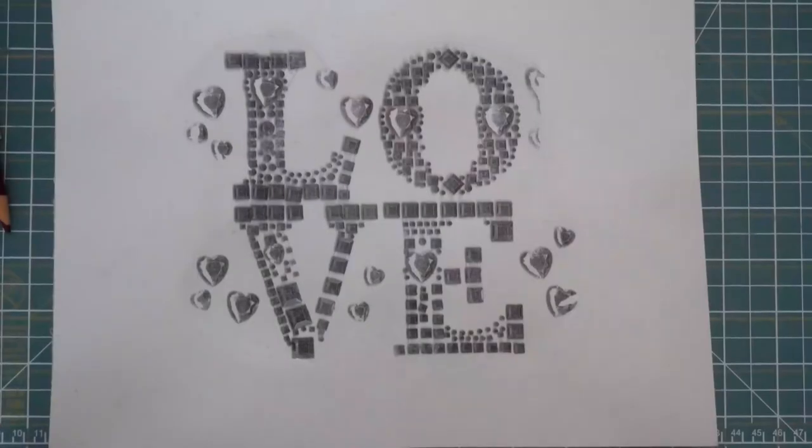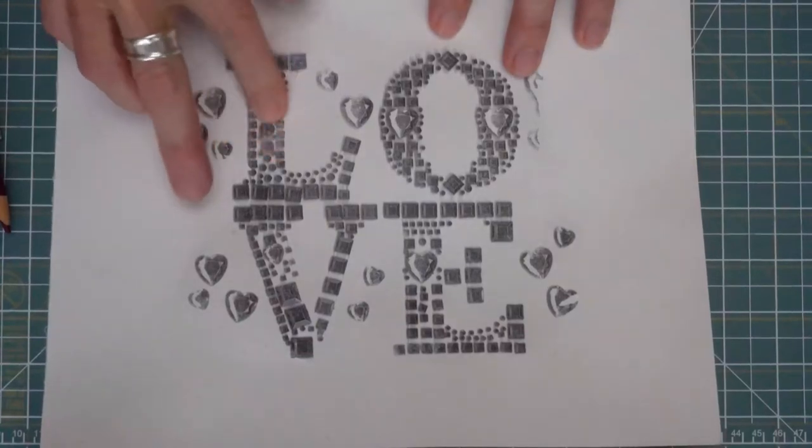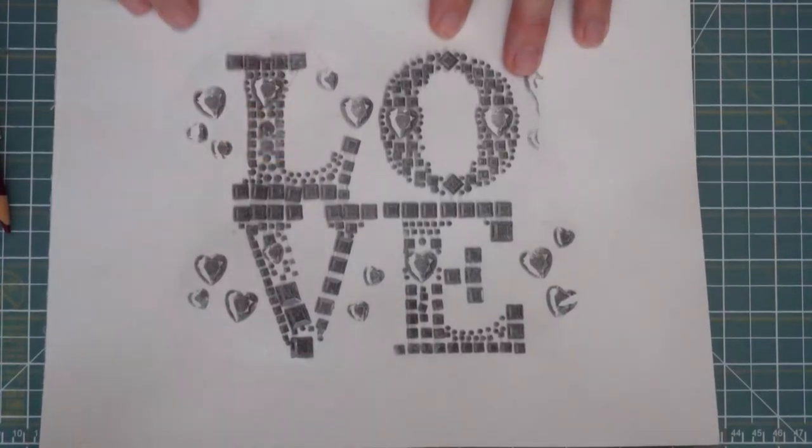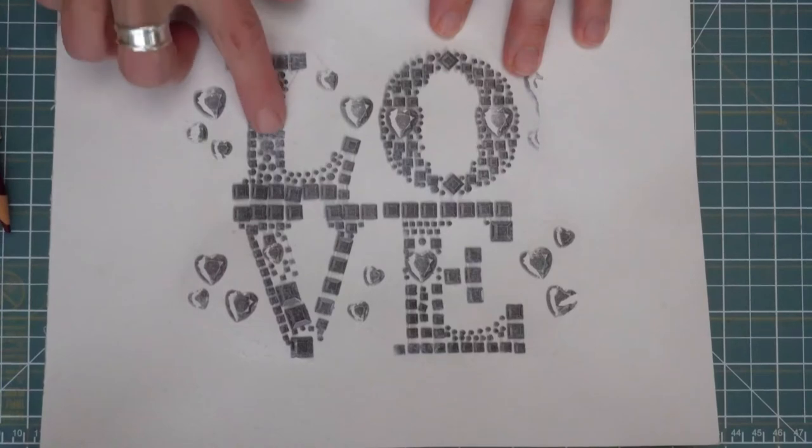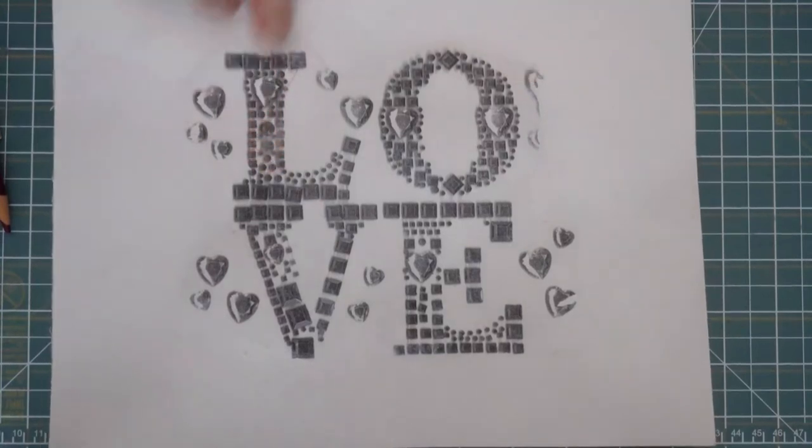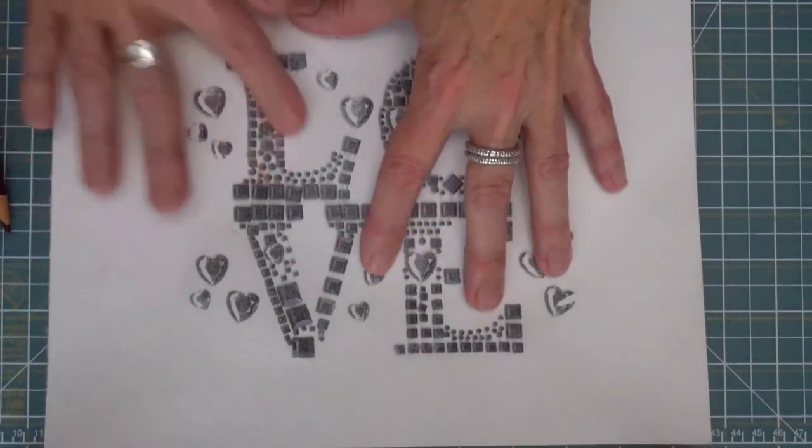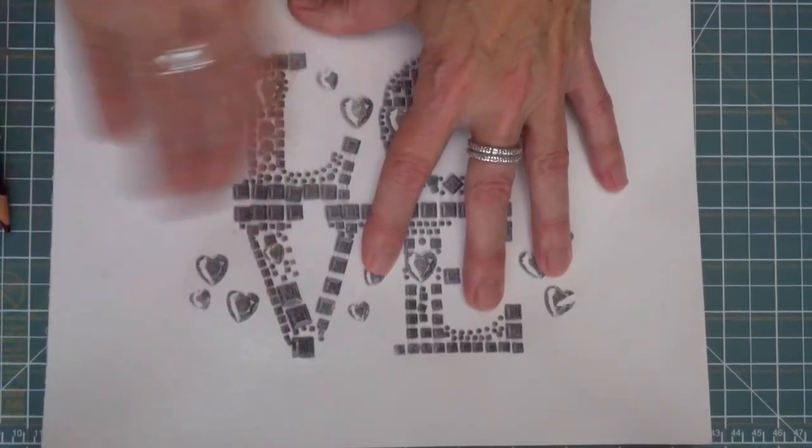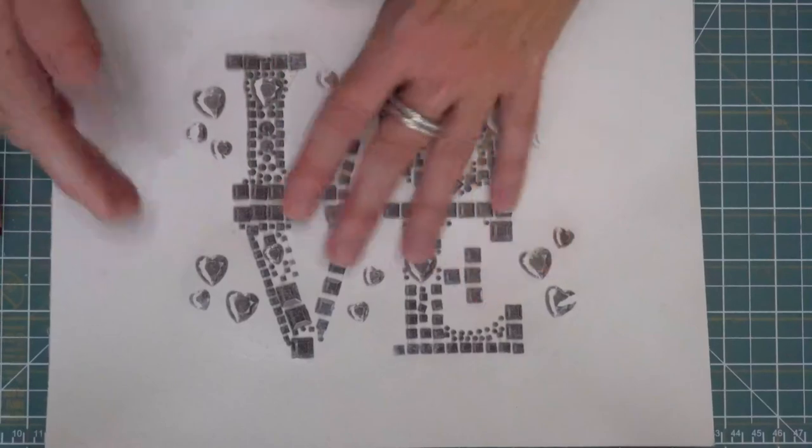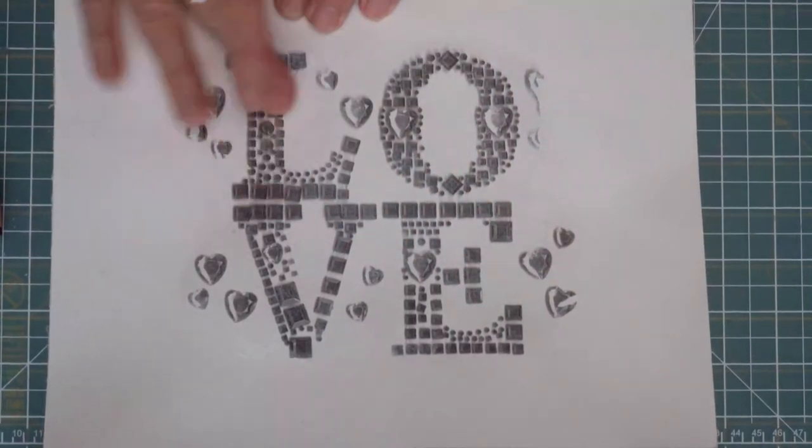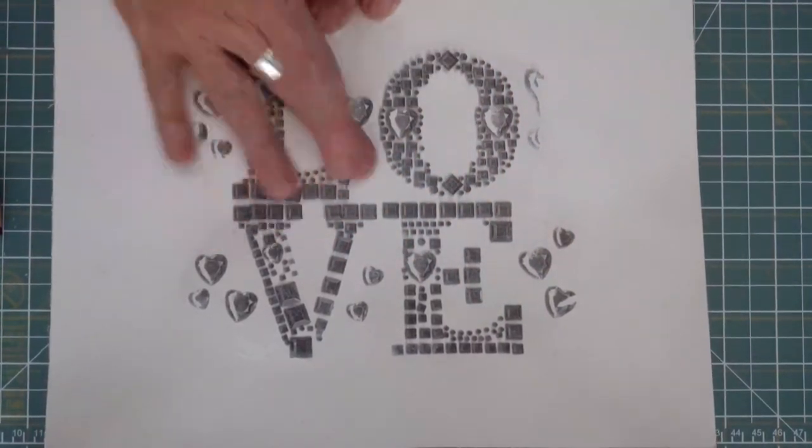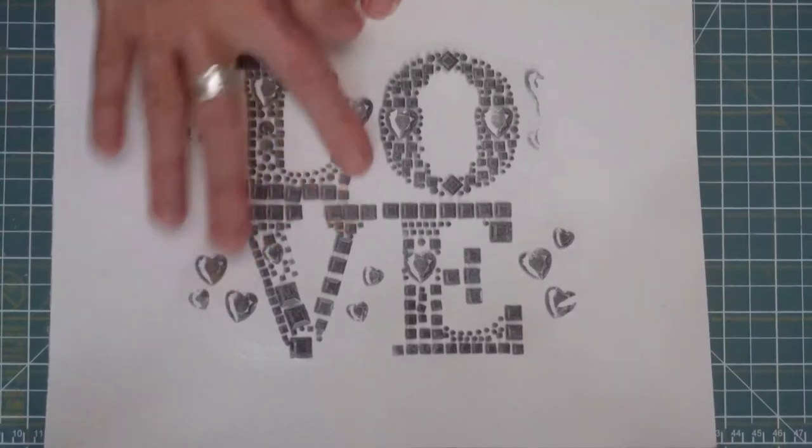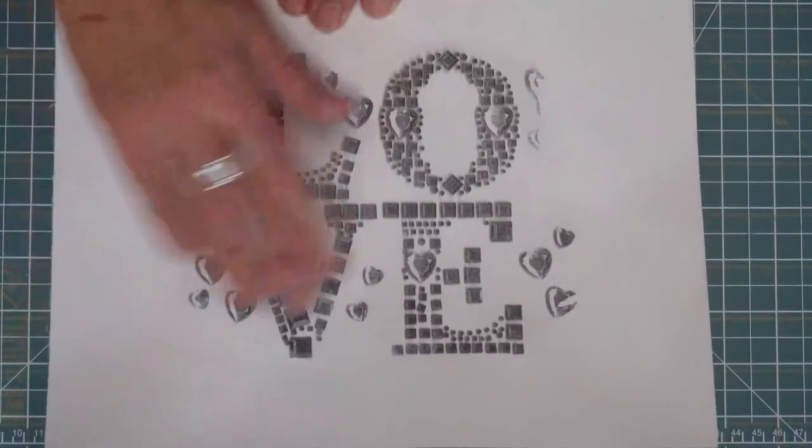So we're back. This is what the print looks like, the transferred print. And there's one area here that I'm going to work on a little bit. Just needs a tiny, tiny little touch-up. But the rest of the areas have come out quite well, and I'm going to leave them alone. Of course, once you start, it's hard to stop. You always feel a little bit more, a little bit more, a little bit more. But there's enough of this image showing through, it looks great.